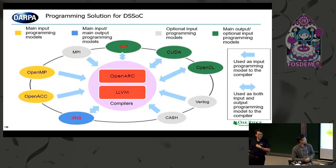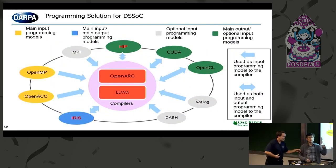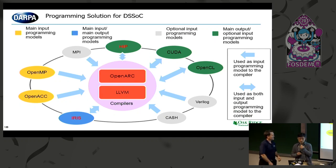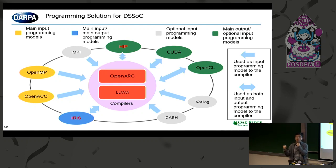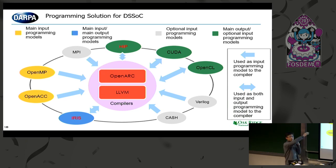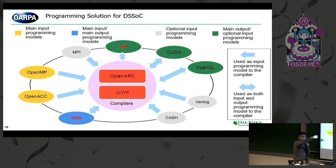I'll talk about the programming system we use to port GNU Radio blocks to heterogeneous devices. This overview shows the system: we use two compilers — OpenARC, which is our homegrown compiler, and LLVM. We support multiple programming models: OpenMP, OpenACC, IRIS, HIP, CUDA, and OpenCL.